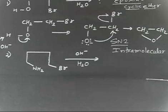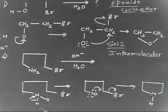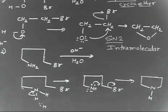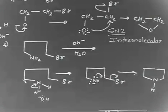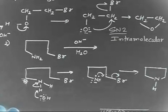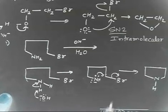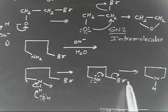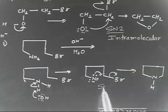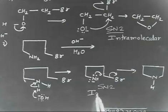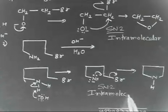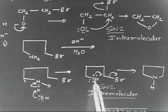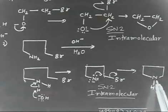Let us see the solution. OH⁻ acts as a base and takes H⁺ from the NH2 group, forming N⁻. In the next step, N⁻ attacks the carbon bearing Br, and Br leaves — this is intramolecular SN2. You get a five-membered ring: one, two, three, four, five. The nitrogen in the ring still has one hydrogen and a lone pair. This is another example of an intramolecular SN2 reaction.